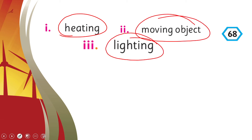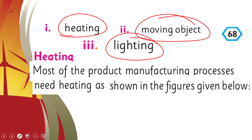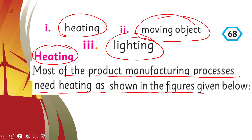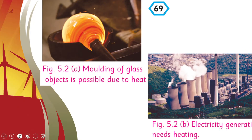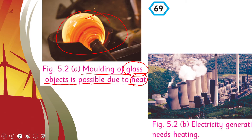Let's discuss heating. Most of the product manufacturing processes need heating. Mukhtalif kaam karne mein cheezon ko produce karne mein hame heat energy ki zarurat pati hai. Molding of glass needs heat energy — glass objects are possible due to heat, as glass ko mukhtalif forms aur shapes mein mold kiya jata hai. Electricity generation also needs heating — you can see coal energy is turned into electricity at a coal plant.